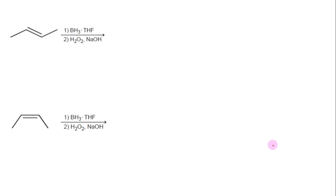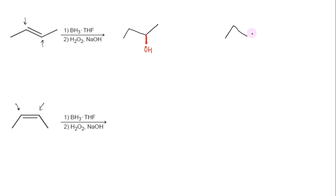Now consider the hydroboration-oxidation of cis and trans 2-butene. Here the regioselectivity is irrelevant because both carbons are equally substituted. Therefore it doesn't matter whether BH2 — which is then replaced by OH in the second step — adds on the right or left carbon. For example, placing it on the right carbon generates one chiral center in the product, so it will be formed as two enantiomers: in one, OH will be above the plane, formed when BH3 approaches from the top face, whereas in the other, OH will be below the plane, formed when BH3 approaches from the bottom face. In the same way, an enantiomeric pair will be formed by hydroboration-oxidation of cis 2-butene, with OH down the plane in one and above the plane in the other.